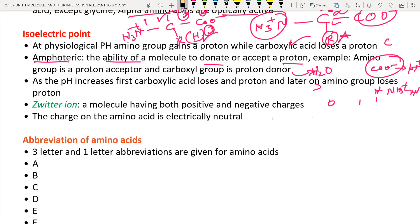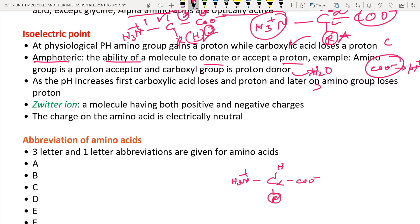Now let us discuss the zwitter ion. What is meant by zwitter ion? First, what is an ion? An ion is anything which has a charge over it — positive or negative. Sodium (Na⁺) and chloride (Cl⁻) are examples of ions. At the isoelectric point (pI), we can understand the zwitter ion concept clearly.